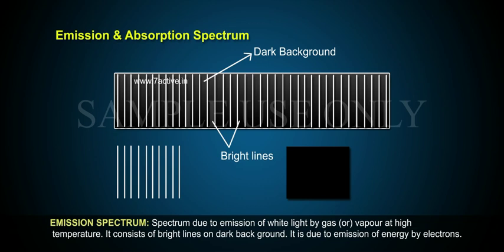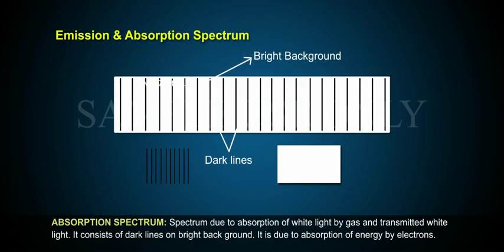Emission spectrum is due to emission of energy by electrons. Absorption Spectrum is the spectrum due to absorption of white light by gas and the transmitted white light. It consists of dark lines on a bright background. It is due to absorption of energy by electrons.